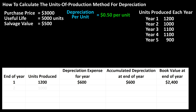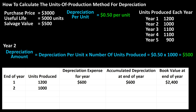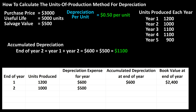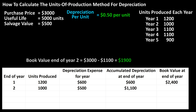For year two, we put a 2 in the first column and 1,000 in the units produced column. The depreciation expense for year two is $0.50 times 1,000 units produced, which equals $500. The accumulated depreciation at the end of year two is $600 plus $500, which is $1,100. The book value at the end of year two is $3,000 minus $1,100, which equals $1,900. Year two is complete.